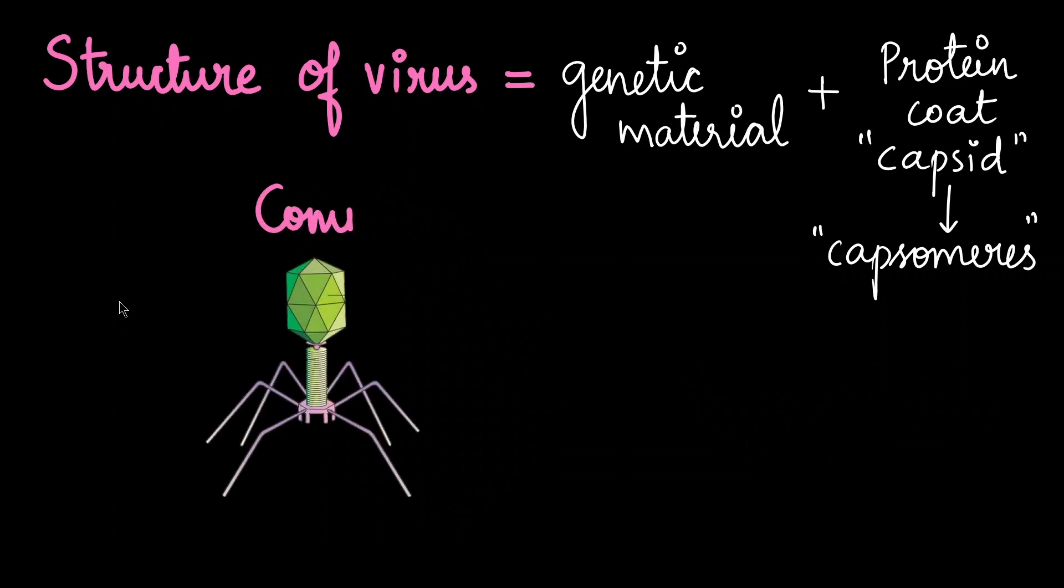We also have shapes which we can't categorize into any of the shapes that we saw earlier. Those we call the complex shapes. This virus actually looks like a spaceship, doesn't it? This is a bacteriophage. Bacterio means bacteria, phage means eating. So these are the viruses which can infect bacteria.